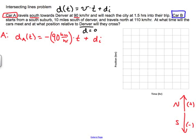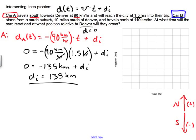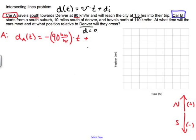However, I know more information. I know that at 1.5 hours, this car is going to be at Denver, which we've already said is position 0. So I'll plug in 1.5 hours and solve for D_i: 0 = −90 km/h × 1.5 hours + D_i. The units cancel, giving 0 = −135 km + D_i, which means D_i = 135 km. Now I know the initial position of Car A, so I'll go back and replace D_i with 135 km in the function.